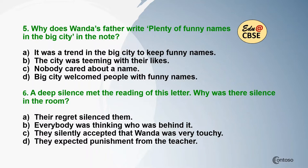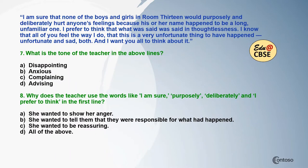Question 6: 'A deep silence met the reading of this letter.' Why was there silence in the room? Question 7 — another extract from the chapter: 'I am sure that none of the boys and girls in room 13 would purposely and deliberately hurt anyone's feelings because his or her name happened to be maybe a long, unfamiliar one. I prefer to think that what was said was said in thoughtlessness. I know that all of you feel the way I do — that is, this is a very unfortunate thing to have happened, unfortunate and sad both. And I want you all to think about it.' What is the tone of the teacher in the above lines? Question 8: Why does the teacher use words like 'I am sure,' 'purposely,' 'deliberately,' and 'I prefer to think' in the extract?